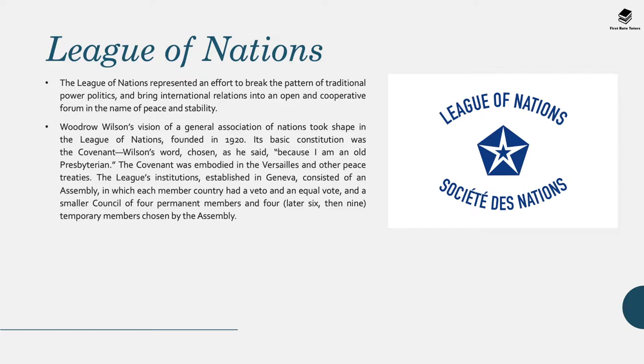During the interwar period, the most important international organization that emerged was the League of Nations. The League really represented an effort to break the pattern of traditional power politics and bring international relations into an open and cooperative forum in the name of peace and stability. President Woodrow Wilson had a vision of a general association of nations that took shape in this body, which was founded in 1920. The basic constitution of the League was the Covenant — Wilson's word, chosen as he said because "I'm an old Presbyterian." The Covenant was embodied in the Versailles Treaty and other peace treaties.